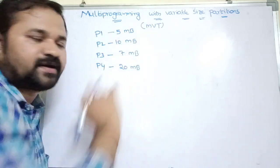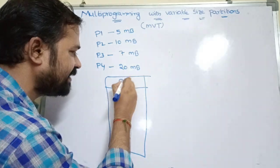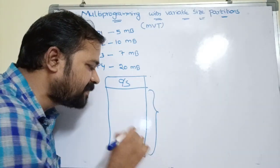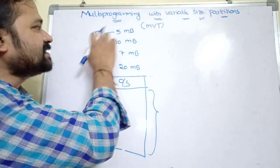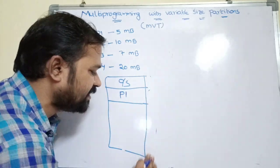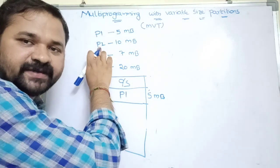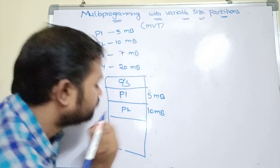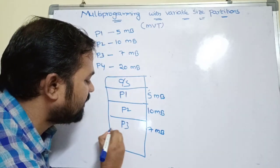The main memory is divided into two parts: the first part contains the operating system, and the second part is the user part. This user part is subdivided into several partitions where each partition accommodates one process. P1 gets 5 MB, P2 gets 10 MB, and P3 gets 7 MB of memory allocated.